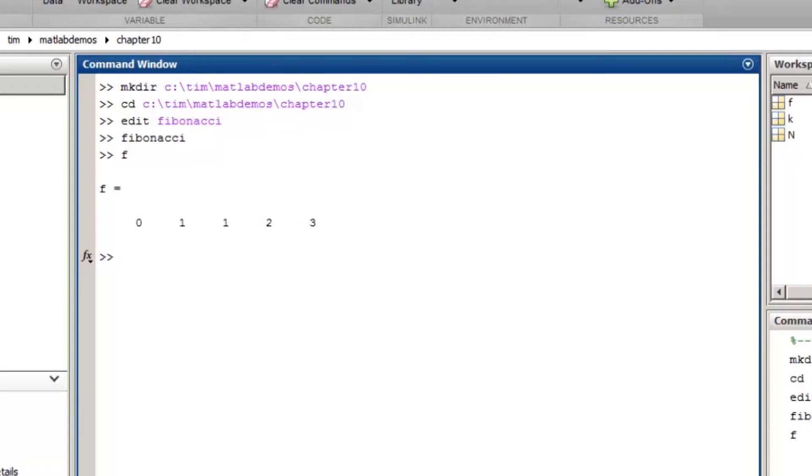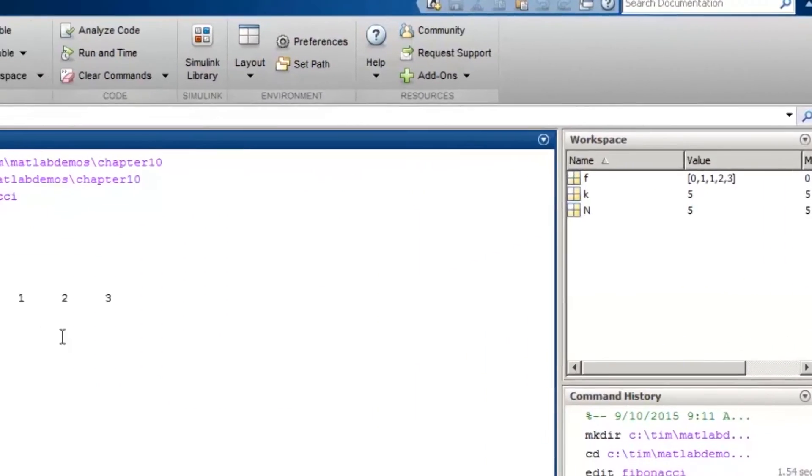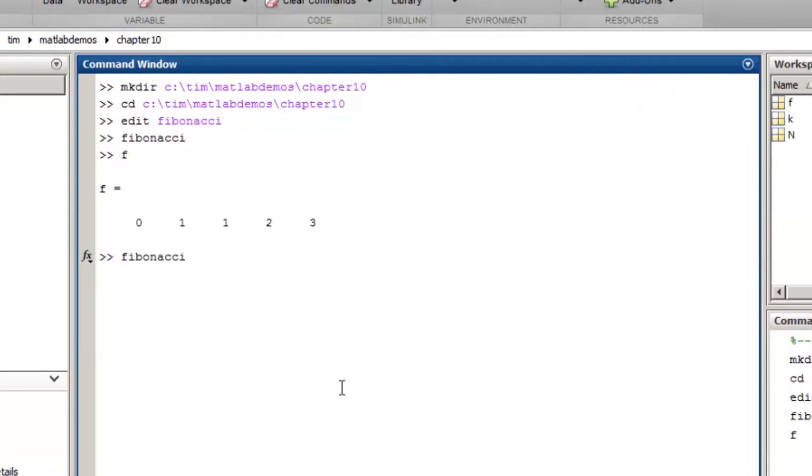However, this code does have a problem. If I go back and set n equals 1, save it, and rerun it, and then type f again to view the file, I get the same result I did before since I never cleared the variable f.